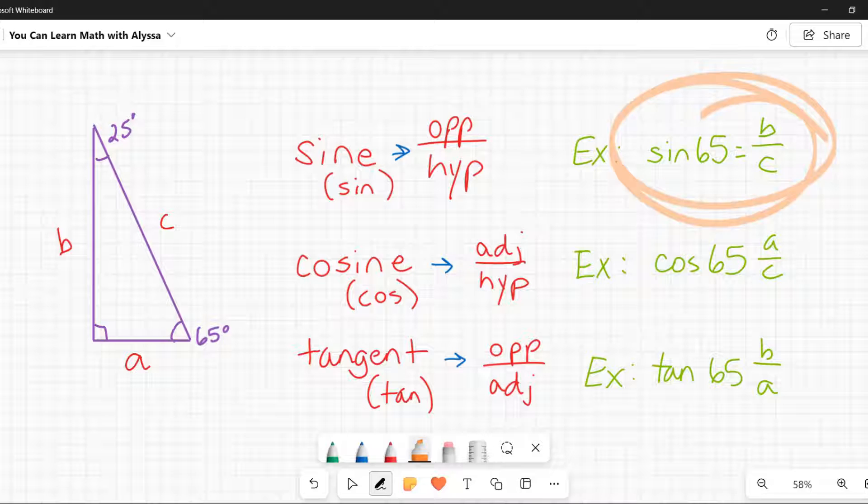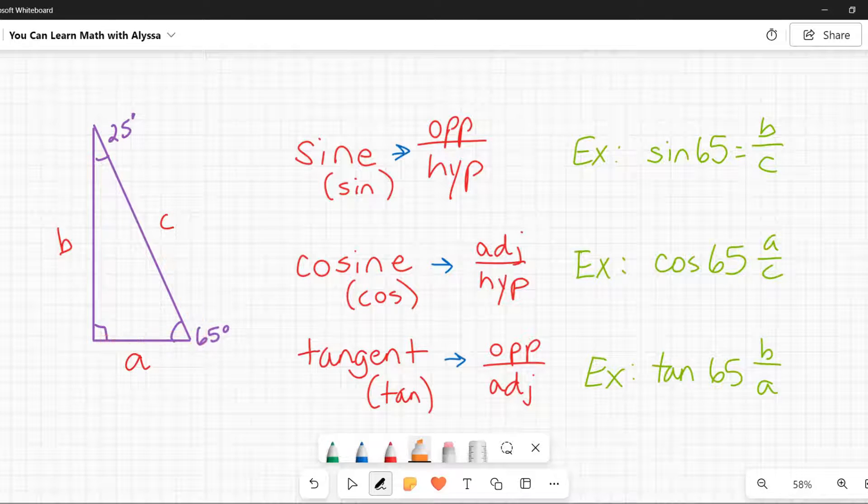Cosine would be the side adjacent to that angle, so for our 65 here the adjacent side would be a, the one touching it, the one sitting next to it, again dividing by the hypotenuse, the longest side. Tangent is the opposite side, in this case again if we're talking about 65 that would be b divided by the adjacent side a.